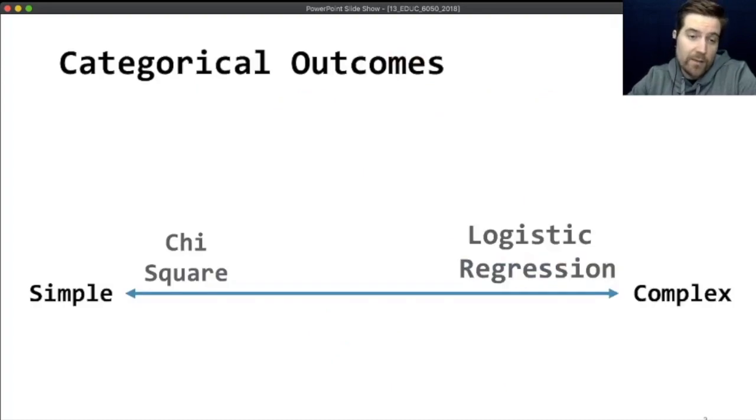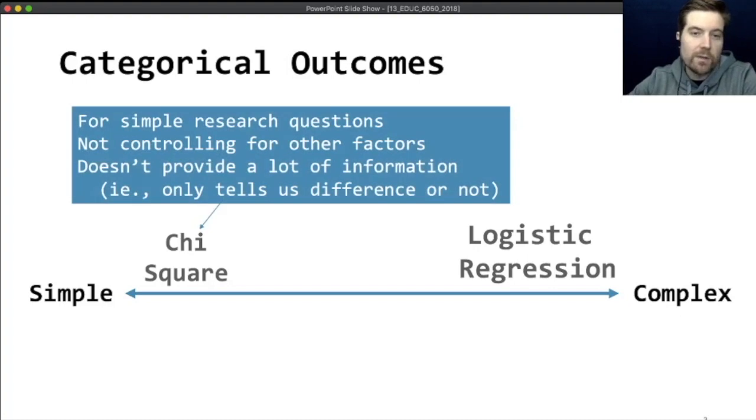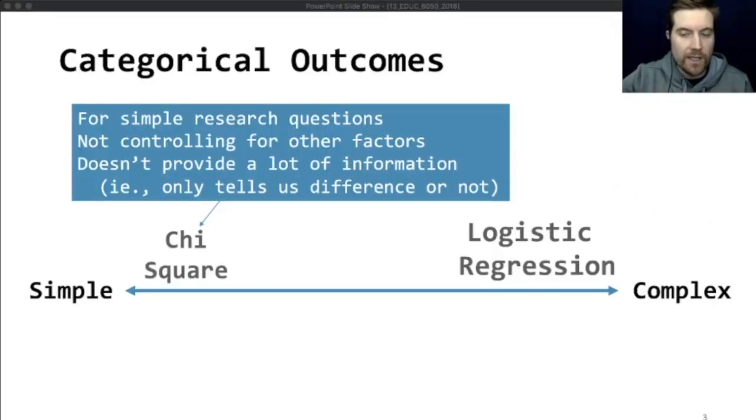There are going to be times where your outcome is not a continuous measure like we've had basically this whole class. Today is going to be about how we handle those situations. For the most part, we're going to have a really simple approach called chi-square. And we're also going to talk about a more complex version, logistic regression, that's built on regression.